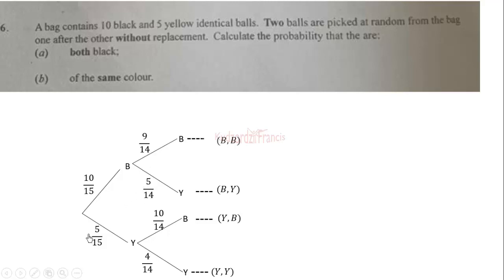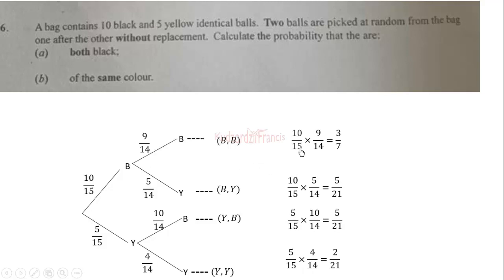When we choose a yellow ball first, the probability is 5 over 15. Then choosing a black ball is 10 over 14, since the black balls are not affected. Choosing another yellow ball after a yellow ball is 4 over 14. For an intersection — both events occurring — the probability that both are black is 10 over 15 times 9 over 14, which equals 3 over 7.